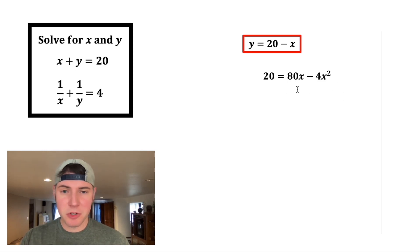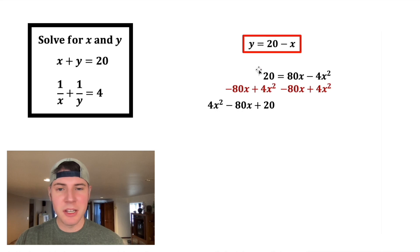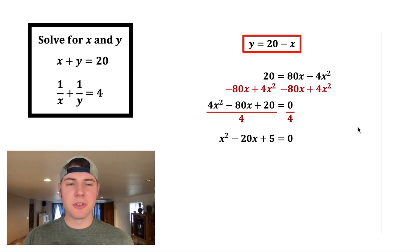Let's set all this equal to zero, so I'm gonna subtract the 80x and add 4x squared to both sides. On the left-hand side, we have 4x squared minus 80x plus 20, and on the right-hand side, we have zero. All these are divisible by four, so let's do that. So that gives us x squared minus 20x plus 5 equals zero.